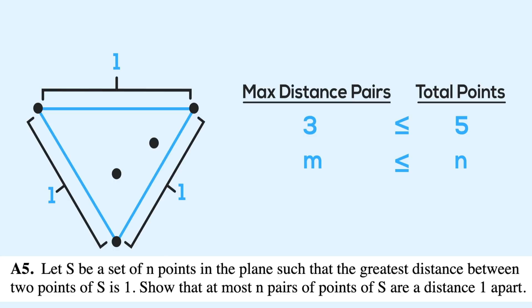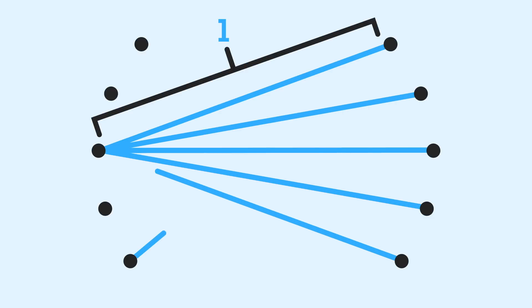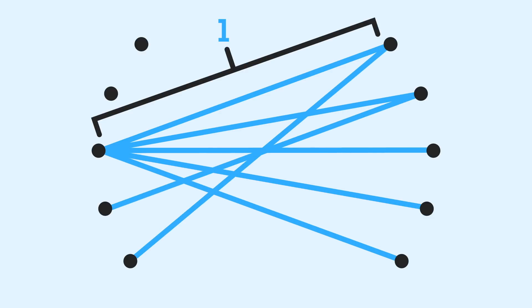So as n gets larger, this gets tougher to think about. If there are ten points, you already have 45 possible pairs that exist. But we must show that, assuming the max distance is one, no more than ten of those 45 pairs can have that max distance.